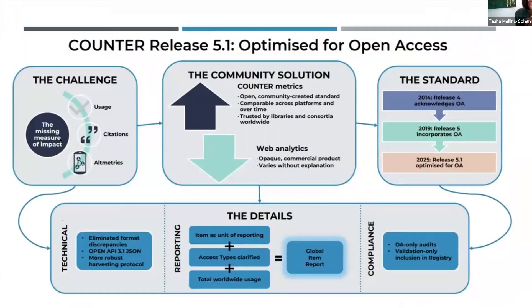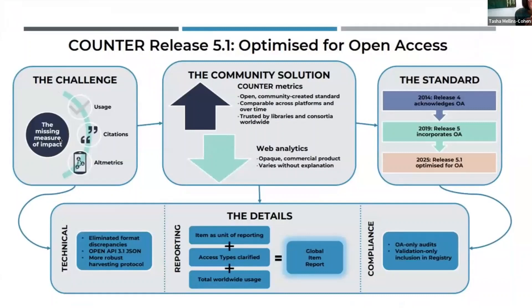I hope that doesn't come out of my four minutes. Counter is the industry standard for usage metrics. We've been around for 20 years, and we've acknowledged and worked with open access for a decade now. Release 5, which came out in 2019, was much better at working with open access. But Release 5.1, which was published this year for compliance in January of 2025, has really been optimized for open access. Usage is really important, not just for measuring return on investment in subscription content, but for measuring impact — one of a suite of measures of impact. And I always say, all metrics should be handled with care.